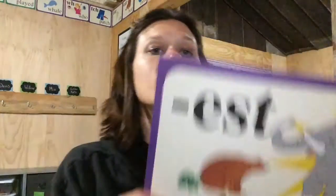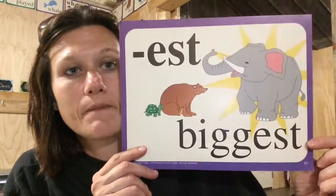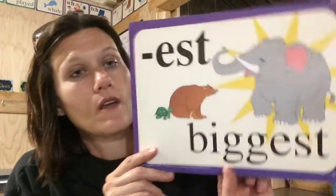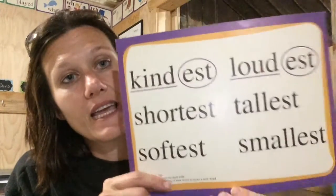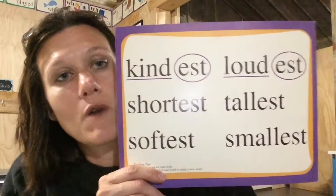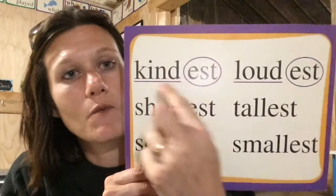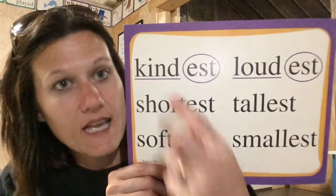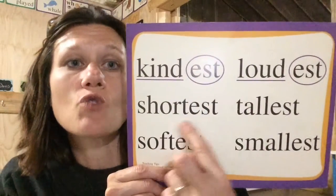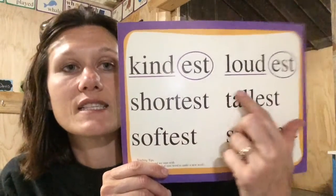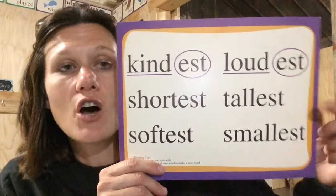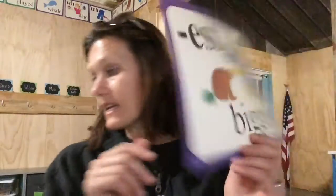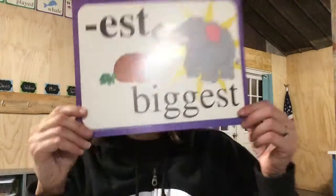Let's also look at the suffix est in biggest. Est can be found at the end of words to make the word slightly different. We've got the root word and the suffix: kindest, strongest, softest, longest, tallest, smallest. All right, so there's your last one for today.